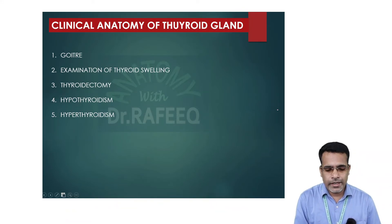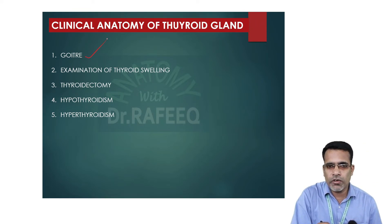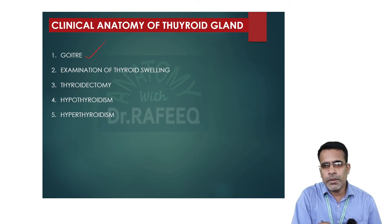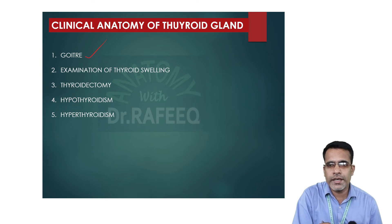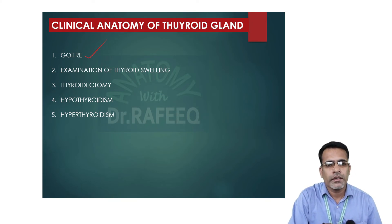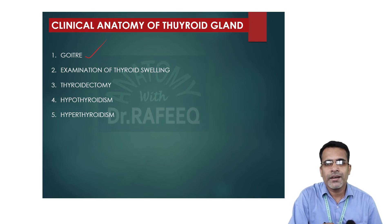Now let us see certain clinical anatomy related to the thyroid gland. Number one is goiter — the enlargement of the thyroid gland, which has multiple causes. To examine the swelling in front of the neck, the patient is examined from behind. By inspection, while the patient extends the neck and swallows saliva, if the swelling moves up and down during swallowing, it confirms the swelling arises from the thyroid gland, because the ligament of Berry connects the thyroid gland to the cricoid cartilage.